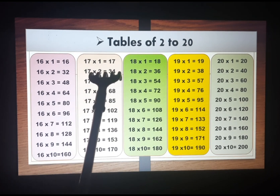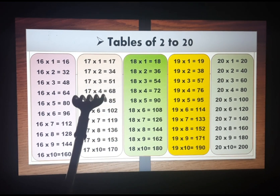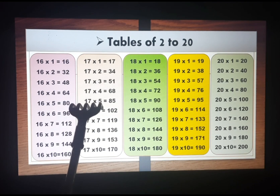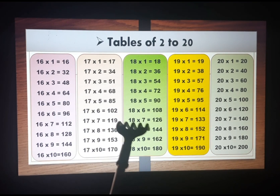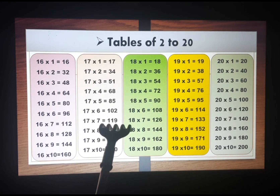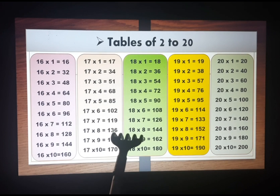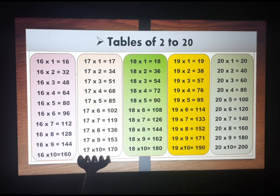Seventeen ones are seventeen, seventeen twos are thirty-four, seventeen threes are fifty-one, seventeen fours are sixty-eight, seventeen fives are eighty-five, seventeen sixes are one hundred two, seventeen sevens are one hundred nineteen, seventeen eights are one hundred thirty-six, seventeen nines are one hundred fifty-three, and seventeen tens are one hundred seventy.